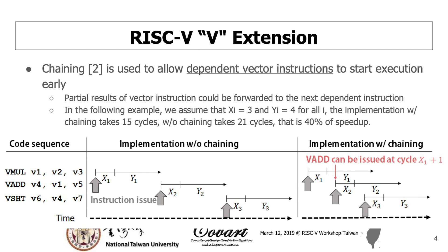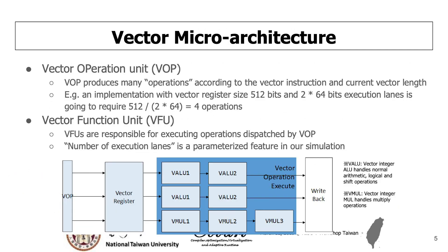Now let's talk about how we implement our vector microarchitecture. As we just said, the vector instruction will take multiple cycles. So we need a unit to split the vector instruction into several operations to execute. That's what the VOP does. The VOP produces many operations according to the vector instruction and the current vector length.